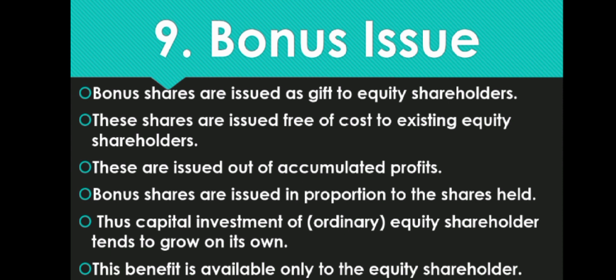Bonus shares are issued in proportion to the shares held — whatever shares equity shareholders have, they receive bonus shares in that proportion. For example, if the proportional rate is 2:1, existing equity shareholders with two shares get one bonus share. This causes the capital investment of equity shareholders to grow in the form of bonus shares. This benefit is available only to equity shareholders.